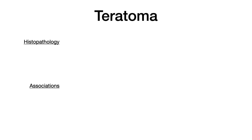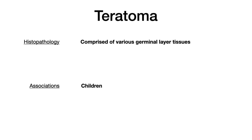Moving to teratoma: this is comprised of different tissues from various germinal layers. You'll see an image of a tumor that looks like it came out of a movie, because it has teeth, hair, and all these different germinal layer tissues rolled into one. It's more often found in children. Some people memorize 'terror-toma' because the tumors look so scary.